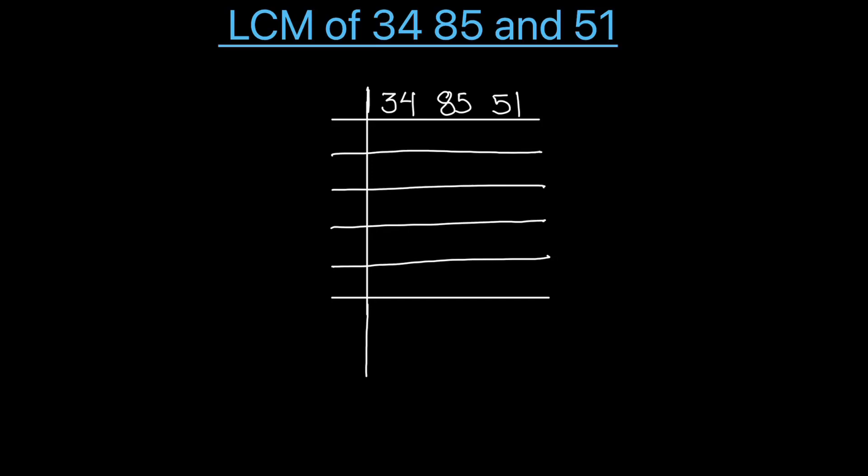Hello students, in this video we are going to learn how to find the LCM of 34, 85, and 51 by using the prime factorization method. In prime factorization method, we divide numbers using prime numbers and find their prime factors. After finding the prime factors, we take the product of the prime factors to find the LCM of these numbers.